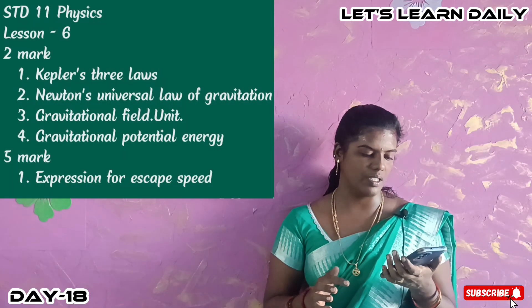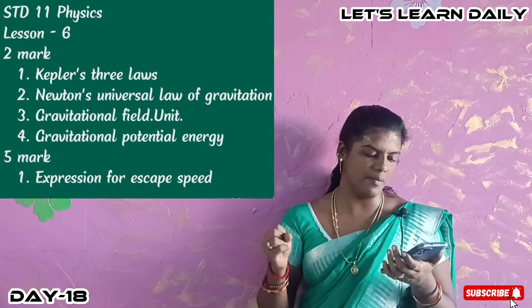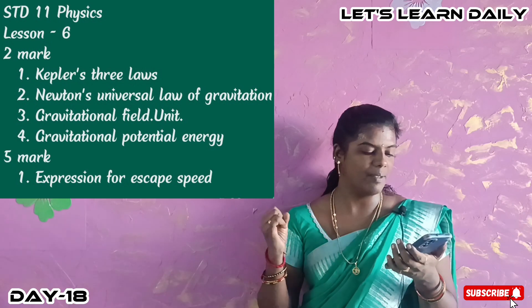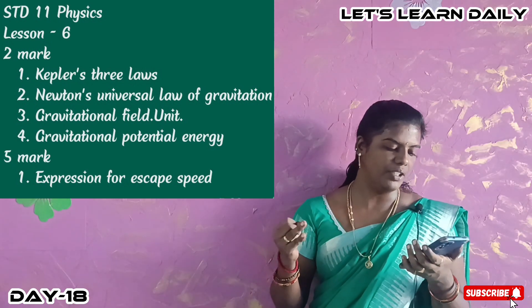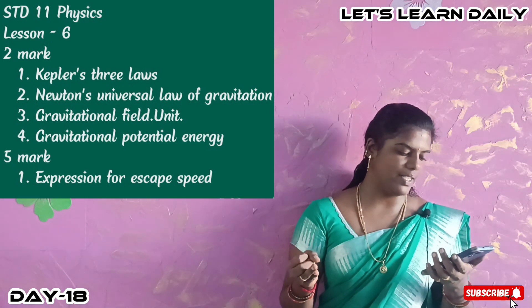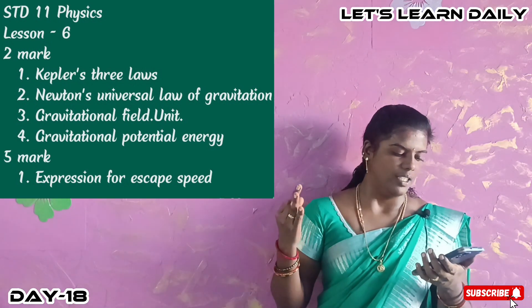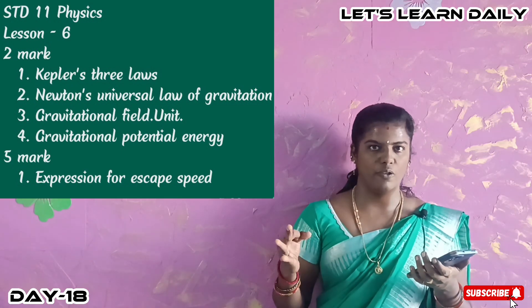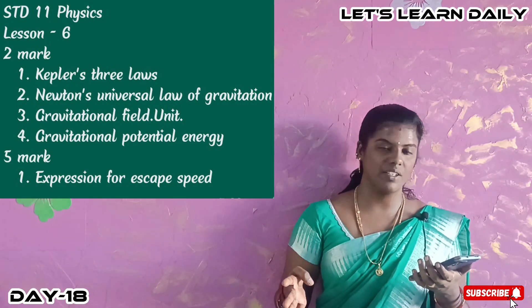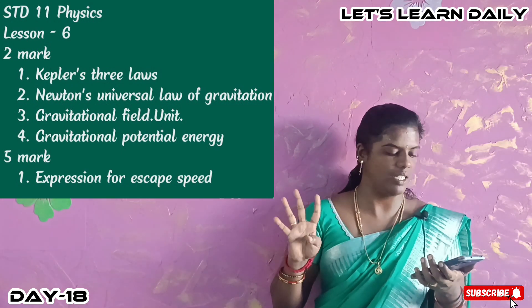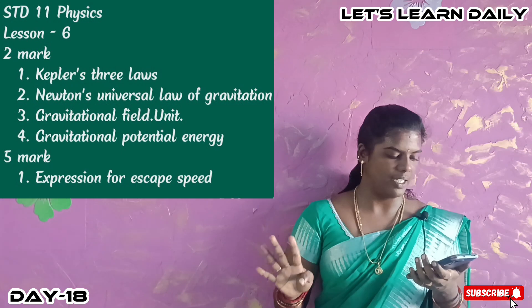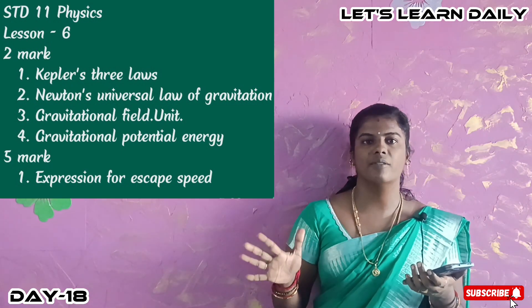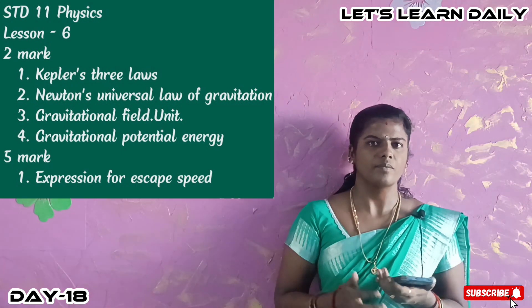Next is 11th physics, lesson 6 — 2 mark and 3 mark questions. Topics include: Newton's universal law of gravitation, what is the gravitational field and what is the unit, gravitational potential energy (2 mark and 3 mark), and expression for escape speed. In this lesson we will cover 6 details.